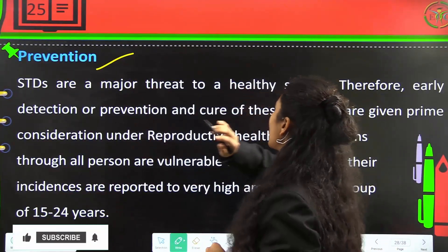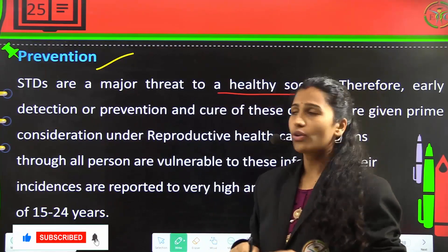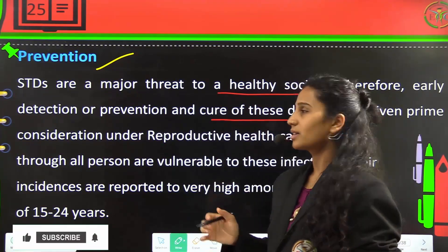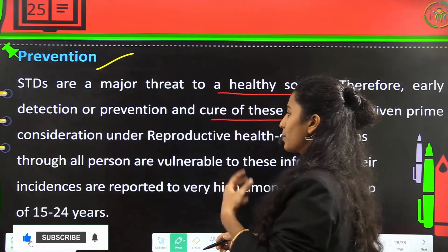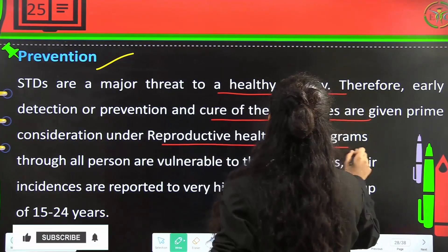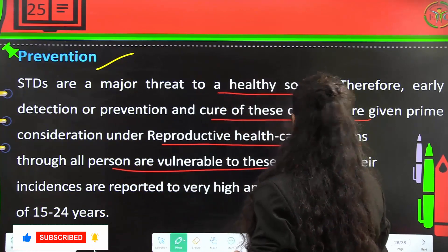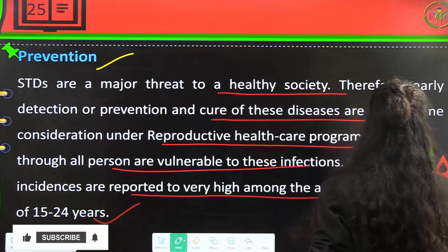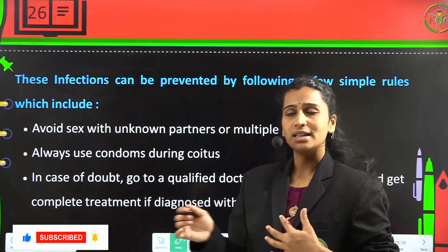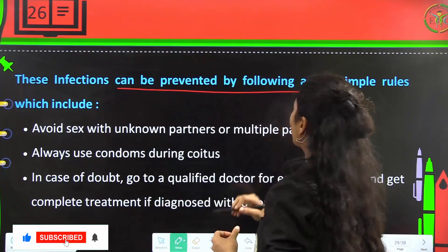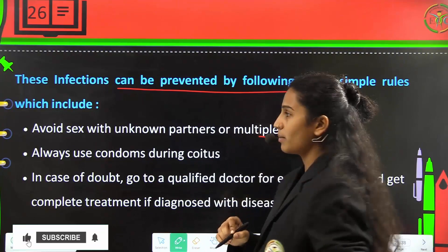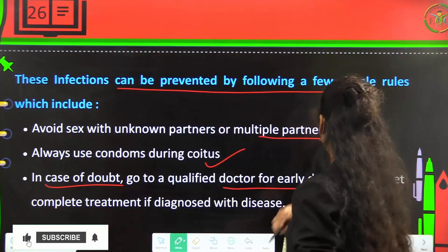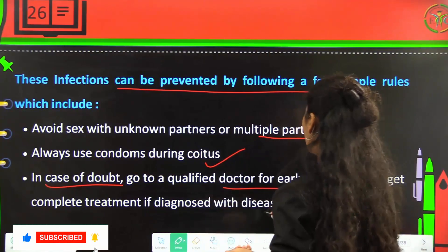Prevention of STDs: STDs are a major threat to a healthy society, and therefore detection, prevention, and cure are given prime consideration. Incidences are reported to be very high in the age group between 15 to 24. STDs can be prevented by avoiding sex with unknown or multiple partners, always using protection during coitus, and in case of doubt, visiting a qualified doctor for early detection and complete treatment if diagnosed.